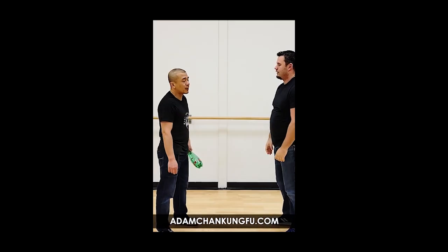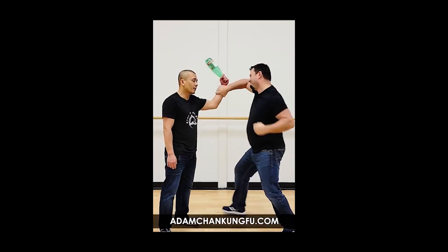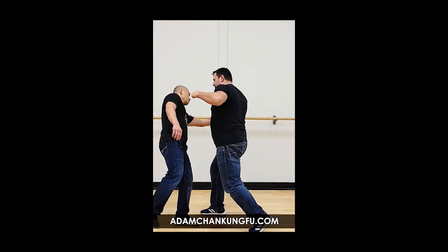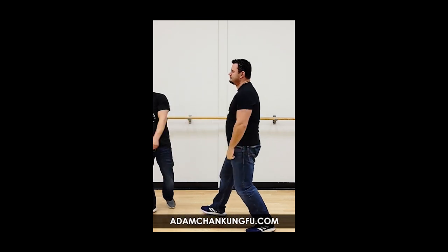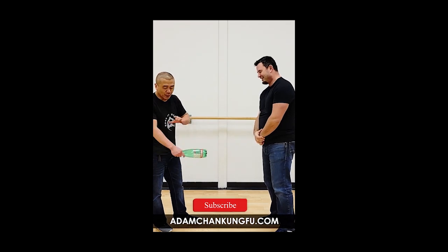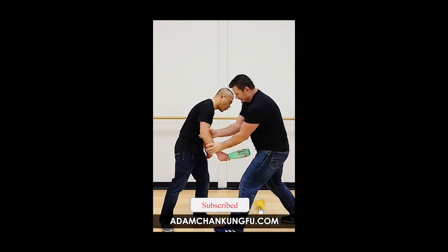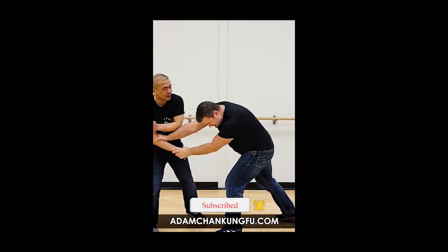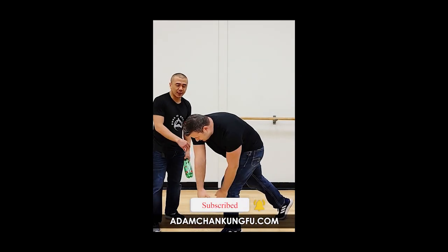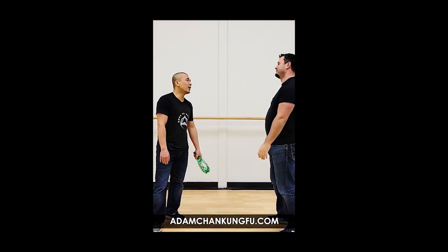Another example is Chris might grab with one hand and punch with the other. So what would I do against that? I'm going to move. If he grabs and doesn't let go — he's really strong — one of the things I can do is just switch hands. Simple.